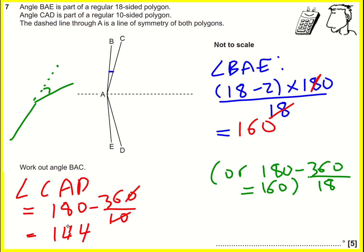So what's happening in here? There's a dashed line through A, which is the line of symmetry. And therefore, I can say that this angle is going to be 160 divided by 2, which is 80.